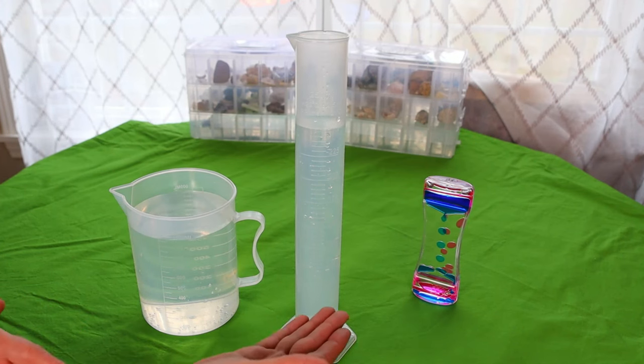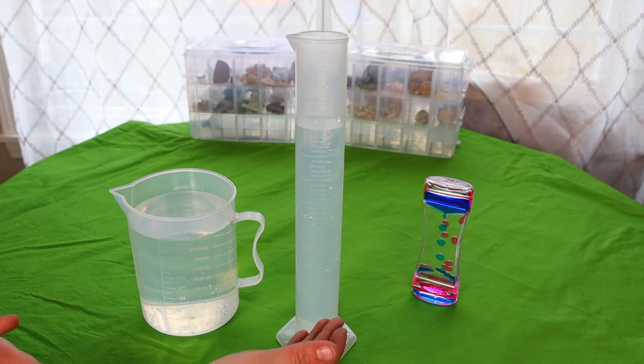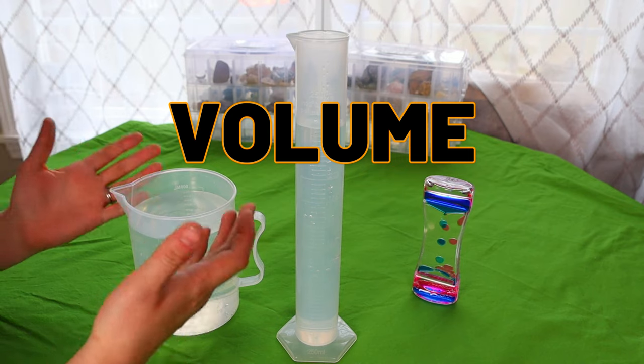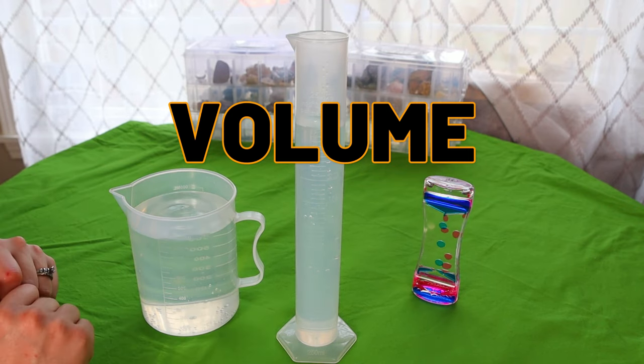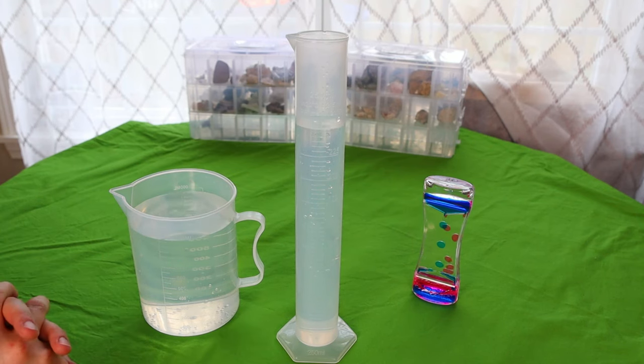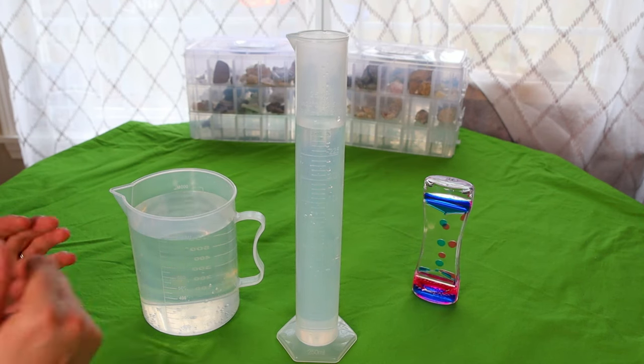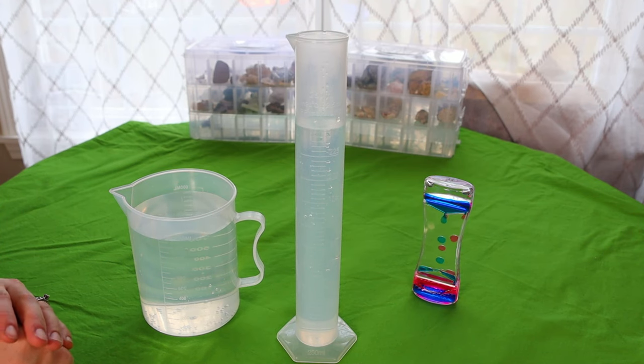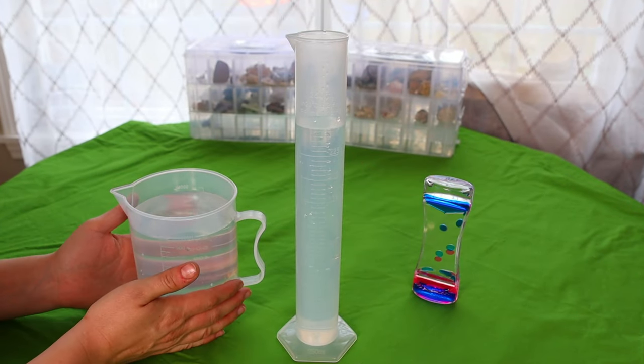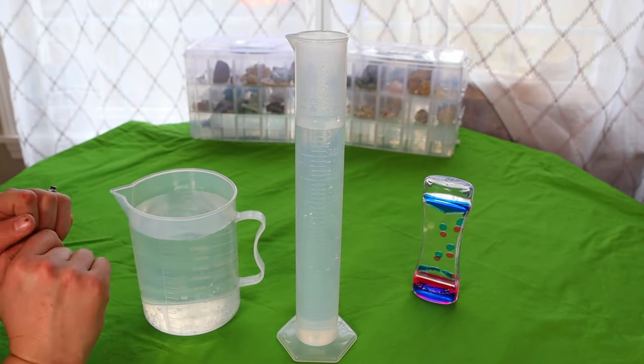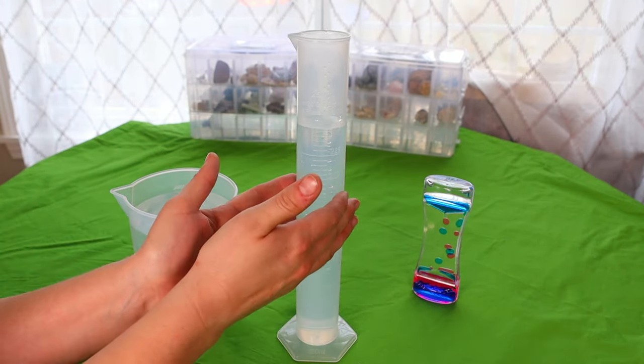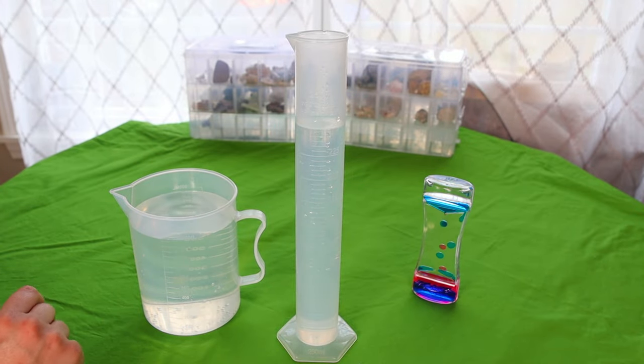I filled up two of the beakers. This tall skinny one and this short fat one. Volume is how much water is in each beaker. Which beaker do you think has more water? That would be an estimate. Which one do you estimate has more water? This one is so tall. Or this one which is so short. But this one is very wide and this one is very skinny. Do you know which one has more water?